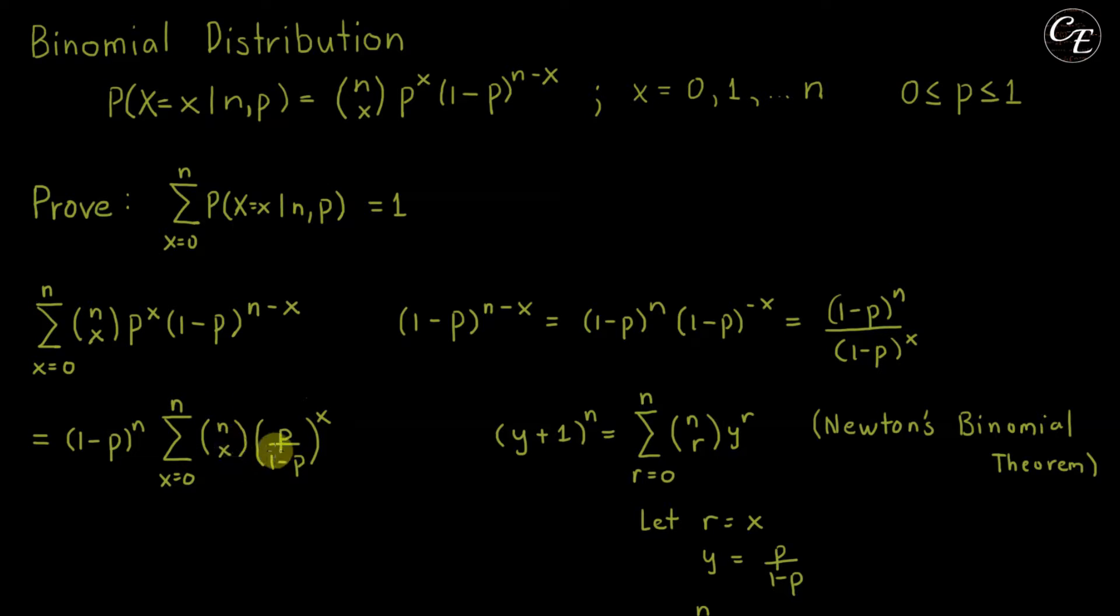Now we can simplify it using Newton's binomial theorem, which is this one. y plus 1 raised to n is equal to summation of n chooses r y raised to r from r equal to 0 until n.